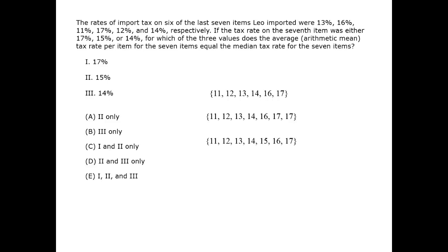We have narrowed to answer choices A and C, but we still must look at case three. In case three, the last number is 14, giving us the following set. Again, 14 is the median, so the 11 and the 17 cancel each other, as do the 12 and the 16. But the differences from the would-be mean of 14 don't cancel for 13 and 14, so the mean isn't 14. Therefore case three is out, and the answer is case two only, or A.